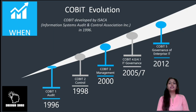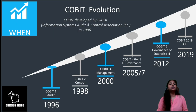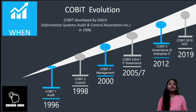Next, in 2012 we had COBIT 5, and the latest iteration is COBIT 2019, where they did away with the 1, 2, 3, 4, 5 numbering and decided to go with COBIT 2019 as per the year of launch.